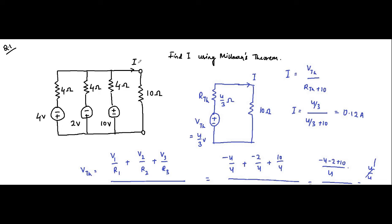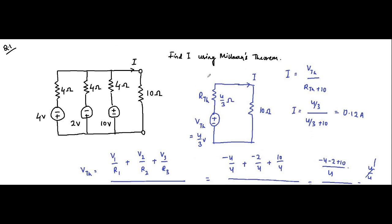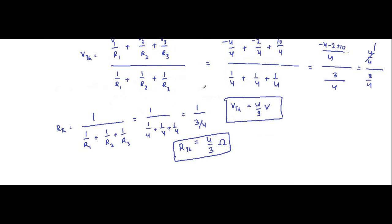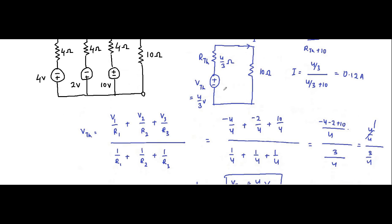If we had used the normal circuit analysis approach — nodal, mesh, or any other circuit theorem — without using Millman's theorem, it would have been lengthy. Lengthy means errors. Using Millman's theorem, we can simplify it very quickly, save a lot of time, and get the result quickly without any errors. This is the first question related to Millman's theorem.